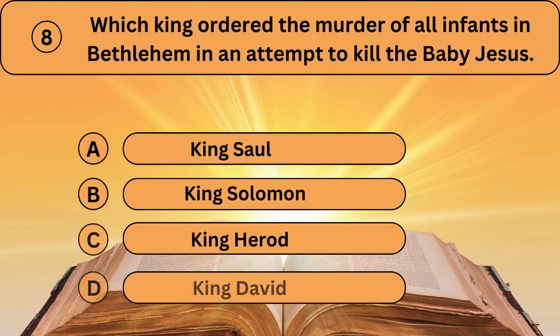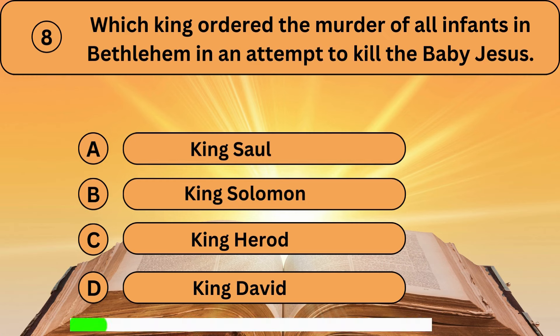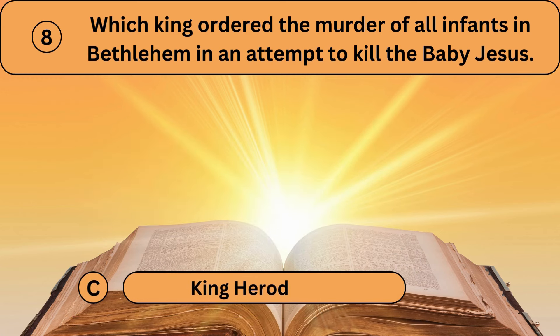Question eight. Which king ordered the murder of all infants in Bethlehem in an attempt to kill the baby Jesus? A. King Saul. B. King Solomon. C. King Herod. D. King David. King Herod is the correct answer.